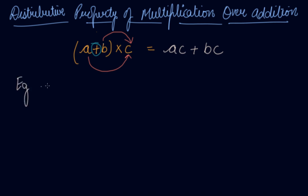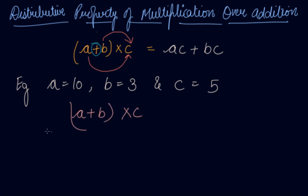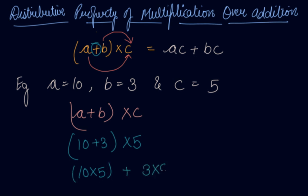Let's take an example. We will take a = 10, b = 3 and c = 5. Applying the property: (a + b) × c means (10 + 3) × 5, which equals 10 × 5 + 3 × 5. So we get 50 + 15, which gives us an answer of 65.